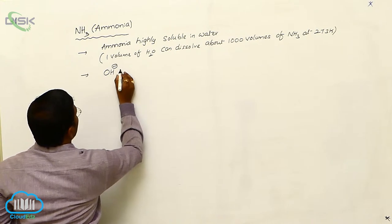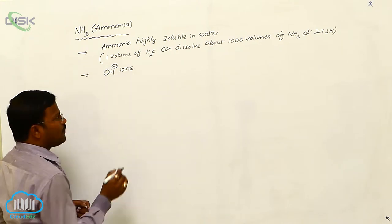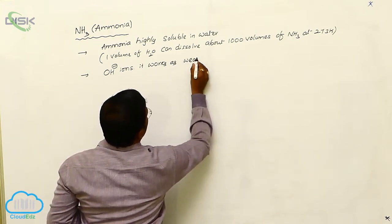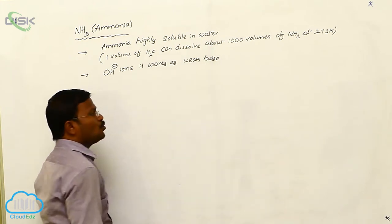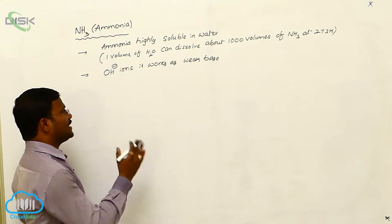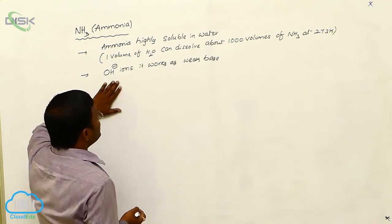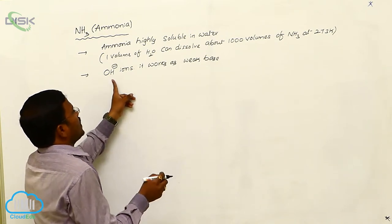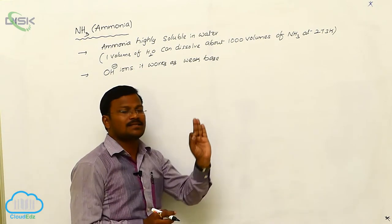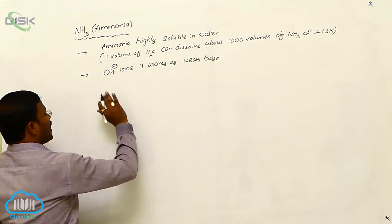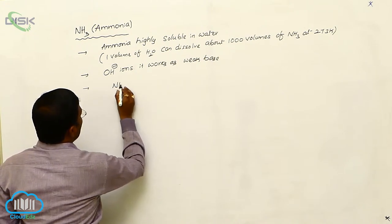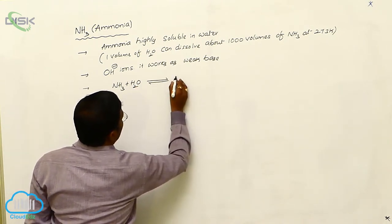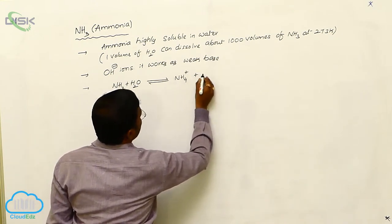By dissolving in water, ammonia produces OH⁻ ions. Due to the formation of OH⁻ ions, it works as a weak base — meaning ammonia shows basic character in nature. This makes it an Arrhenius base. When ammonia dissolves in water, it reacts with H₂O to produce NH₄⁺ plus OH⁻.